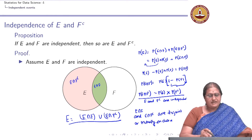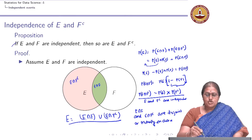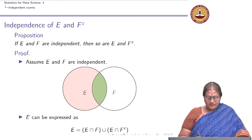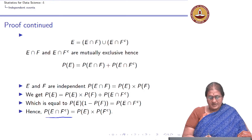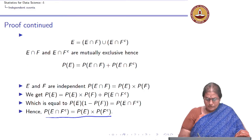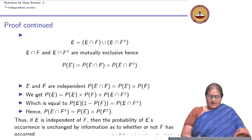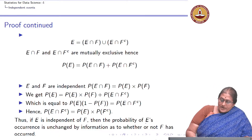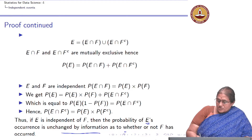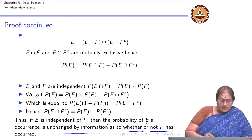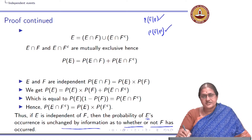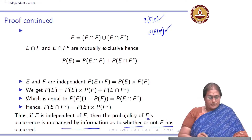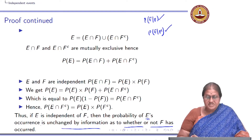We can see that if E and F are independent, so are E and F complement. We have established that P(E∩F complement) = P(E)·P(F complement). What this entails is that the probability of E's occurrence is unchanged by the information as to whether F has occurred or F has not occurred. So whether we condition on F or on F complement, if E and F are independent, the probability of E's occurrence is unchanged.